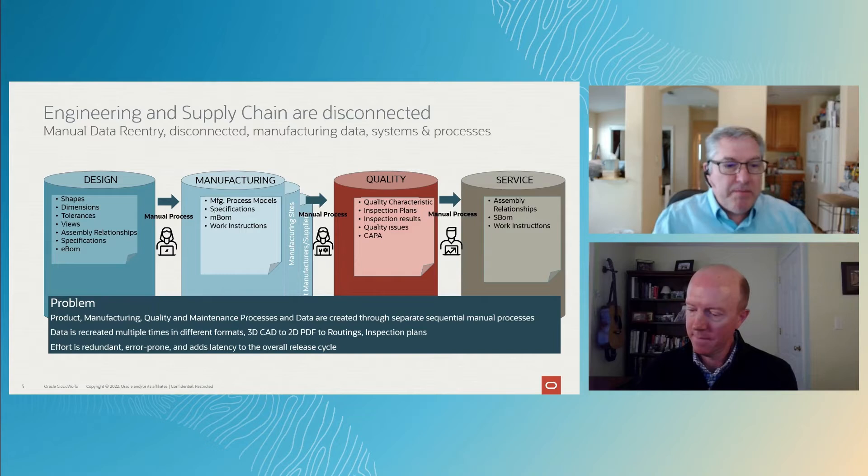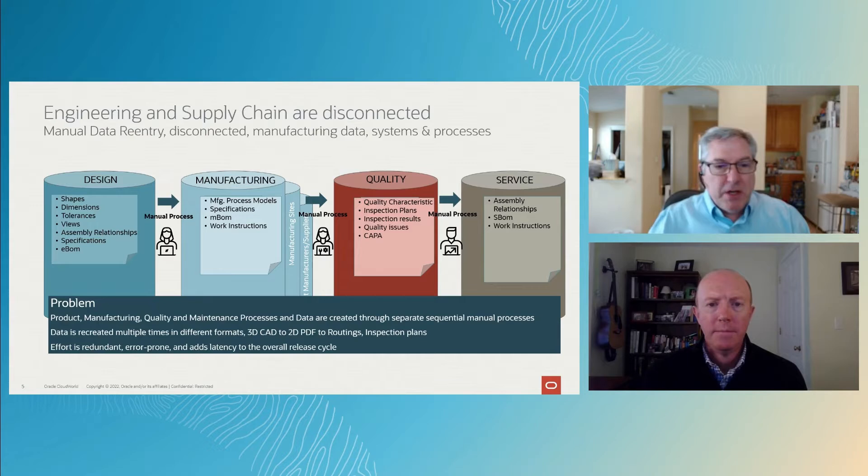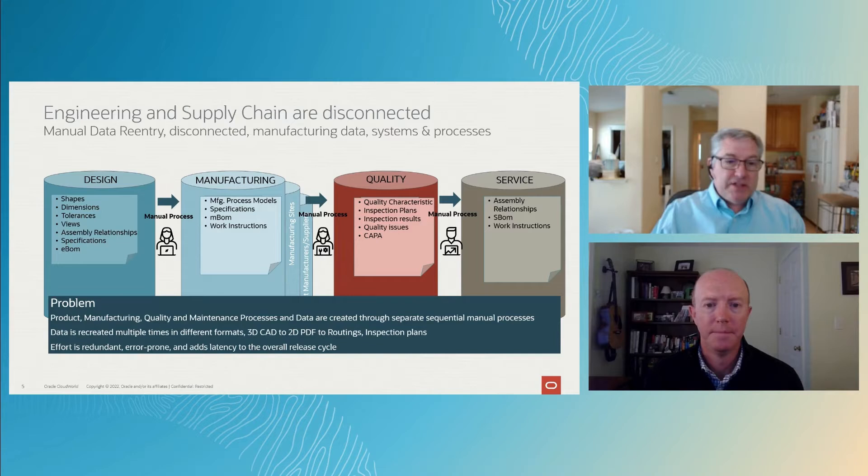Every time I create a new version of that engineering design, I'm recreating these downstream views of it. It's a very sequential, manual process. Anytime you're talking manual, you're talking error-prone — it's redundant, it's got latency, so you've got cycle time issues. It's amazing how much time engineers spend frustratingly recreating different views of their design for downstream applications to work.